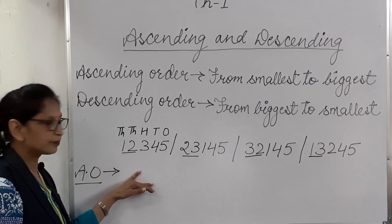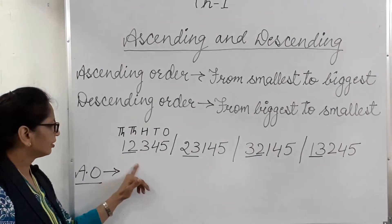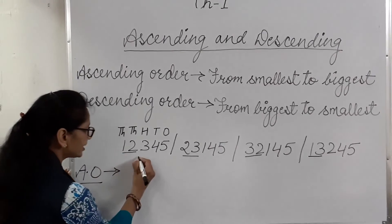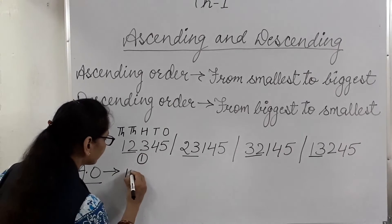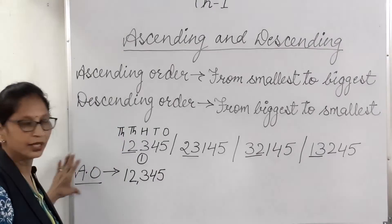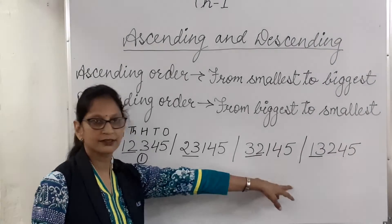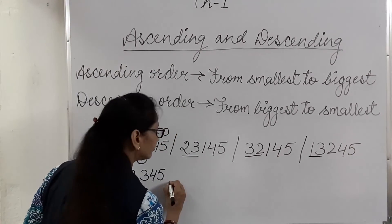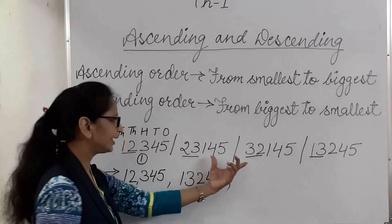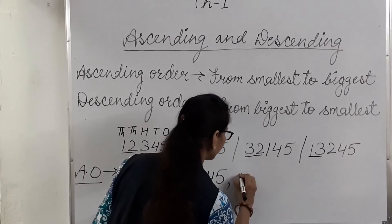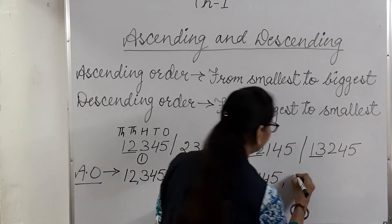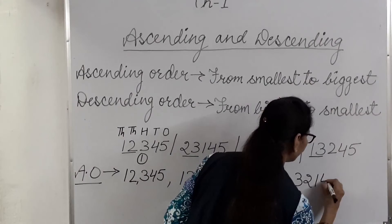What is the smallest number? Among 12, 23, 32, and 30, the smallest is 12. So in ascending order we start from twelve thousand three hundred and forty-five. Remaining numbers — the next smallest is thirteen thousand two hundred and forty-five. Then twenty-three thousand one hundred and forty-five. And last, thirty-two thousand one hundred and forty-five.